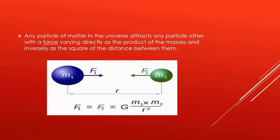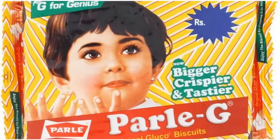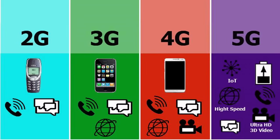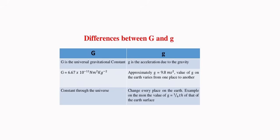And here we are introduced to G. Now there are two types of G in the world — 2G, 3G, 4G, 5G! Capital G and small g. The value of capital G is constant throughout the universe, but small g is acceleration due to gravity — it varies from planet to planet and place to place.